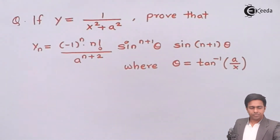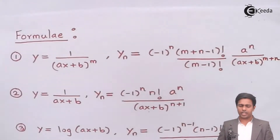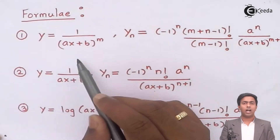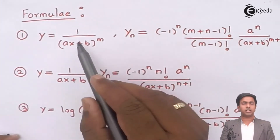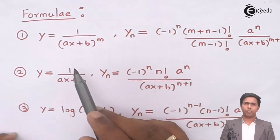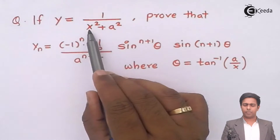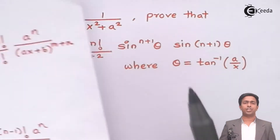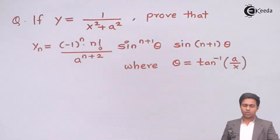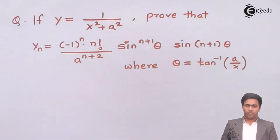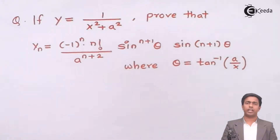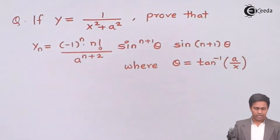On your screen you can see some formulae. The first two formulae are to find out the nth derivative of an algebraic function. If I want to apply any of these formulae then I have to bring x square plus a square from quadratic nature to linear form. So to bring it to linear form I will divide x square plus a square into two brackets. Let's see how.